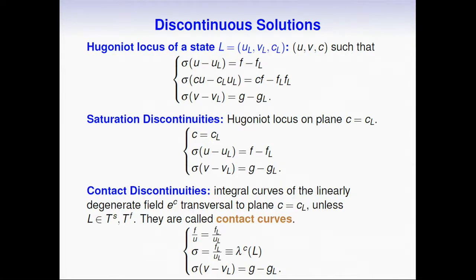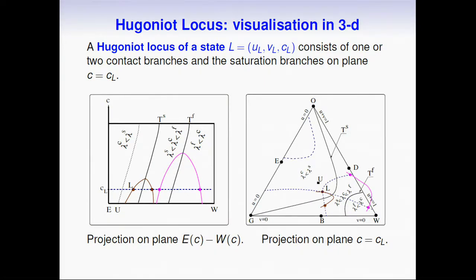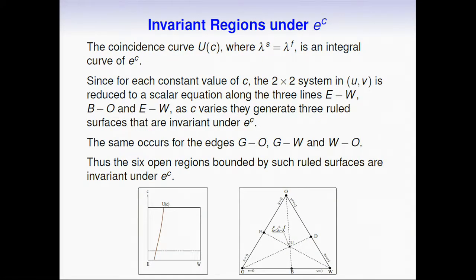A discontinuous solution: we have the Rankine-Hugoniot locus like this one. For c constant, we have the Hugoniot curve for the two-by-two system and contact discontinuities that we call contact waves. Also in 3D we see something like this. Now I plot the Hugoniot branches on the plane c equals c_L. You see the contact branch that starts here, goes to the coincidence curve, and goes back.